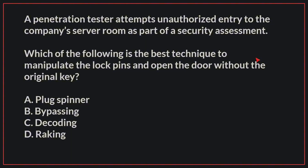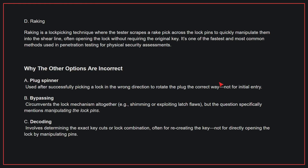A penetration tester attempts unauthorized entry to the company's server room as part of a security assessment. Which of the following is the best technique to manipulate the lock pins and open the door without the original key? The correct answer is D, raking. Raking is a lockpicking technique where the tester scrapes a rake pick across the lock pins to quickly manipulate them into the shear line, often opening the lock without requiring the original key. It's one of the fastest and most common methods used in penetration testing for physical security assessments.